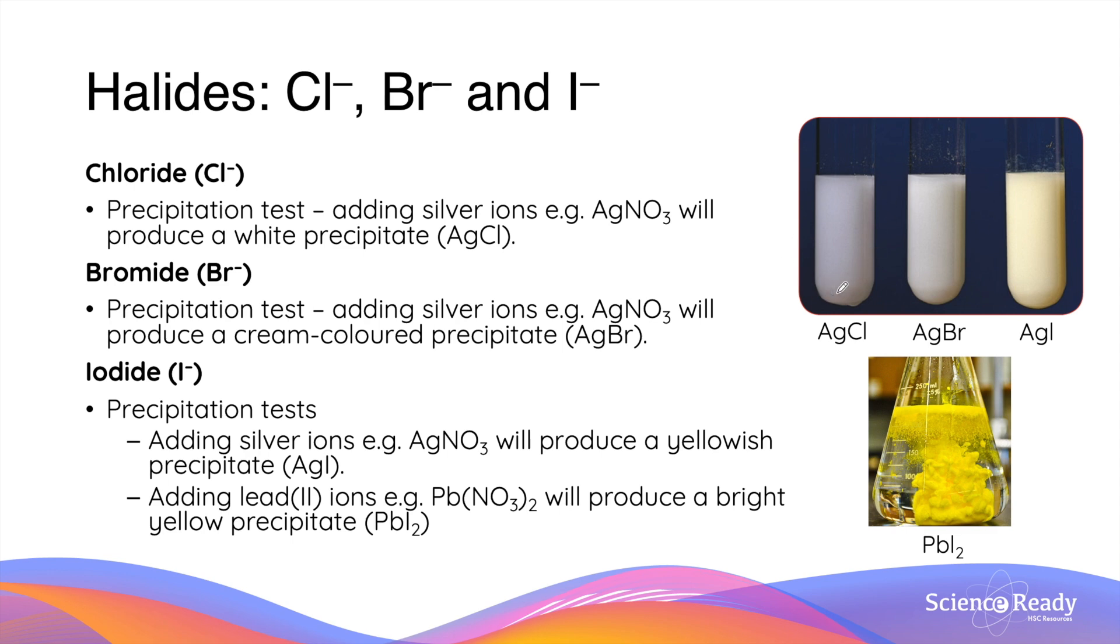Silver chloride has a white appearance, silver bromide has a creamy appearance, whereas silver iodide has more of a yellowish appearance. Remembering the colors of each precipitate is a very useful way of identifying the presence of either chloride, bromide or iodide ions.